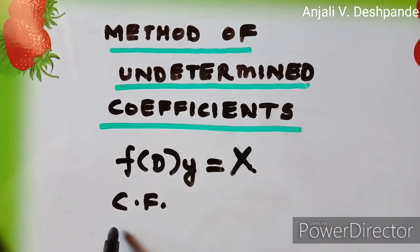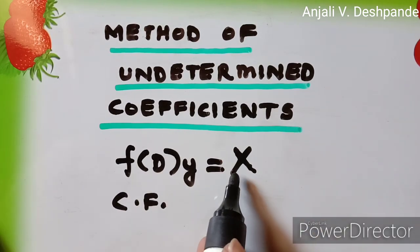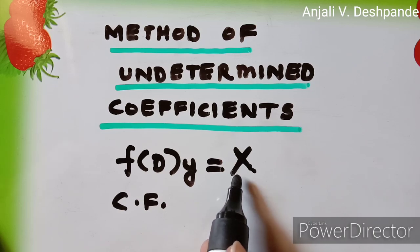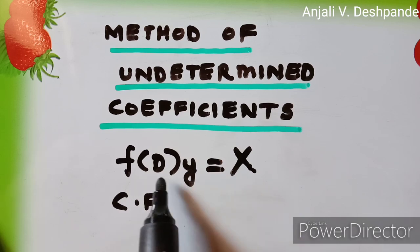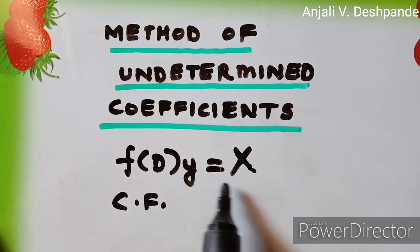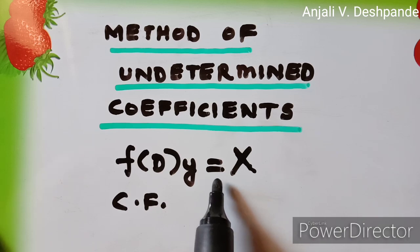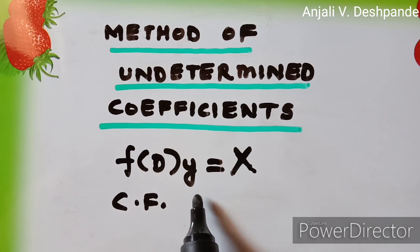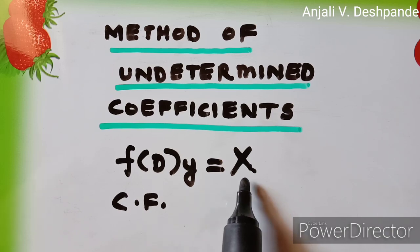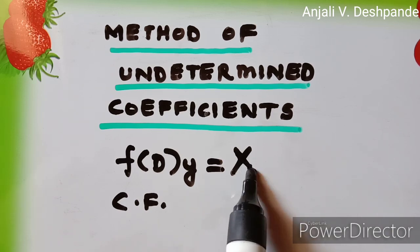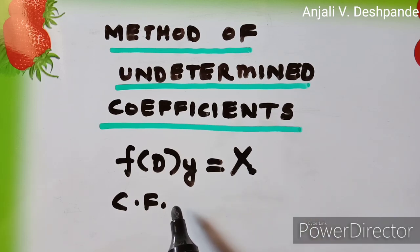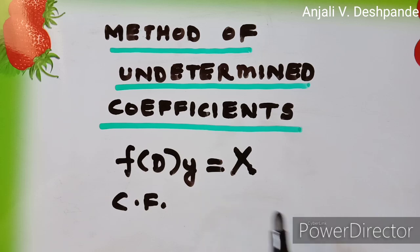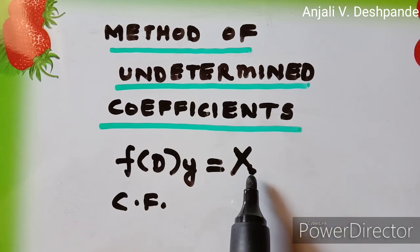In this method, depending upon the nature of X, we are going to assume a trial solution for the given differential equation and then we are going to find the PI. However, you have to understand that there are some limitations to this method, and this method mostly works when X is either a polynomial, an exponential, a sine or cosine, or a linear combination of those kinds of functions.